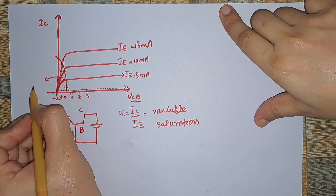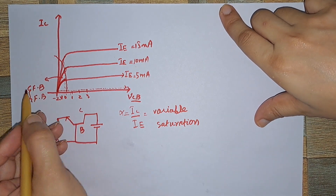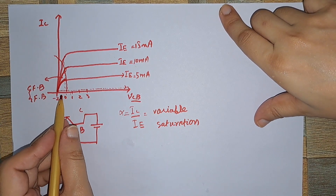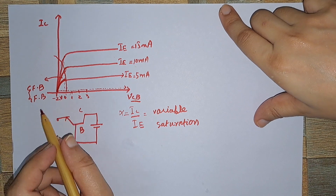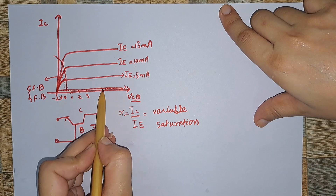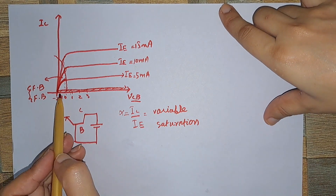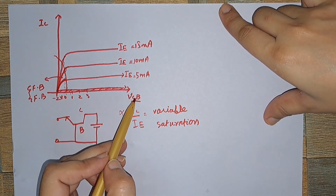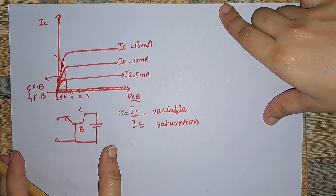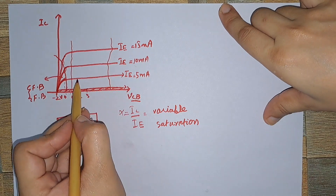In the saturation region, both the collector-base junction and the emitter-base junction are forward biased. We do not operate the transistor in this particular region except when designing a switch. Below the curves is the cutoff region, where the transistor is considered off because there is no input current and no output current.